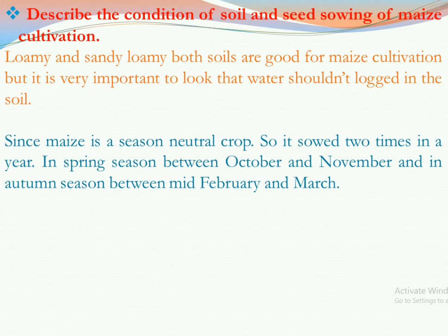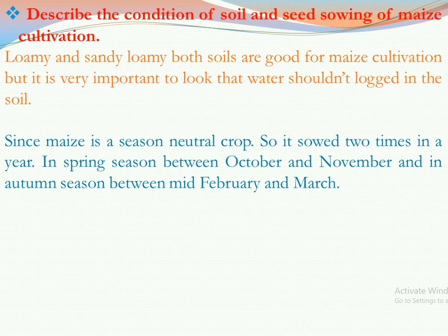Since maize is a season-neutral crop, it is sown two times a year — in spring season between October and November, and in autumn season between mid-February and March. In these two time periods we can sow maize in the land.